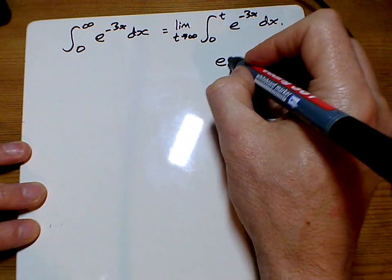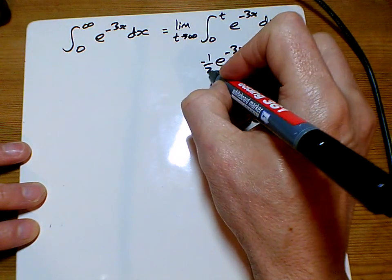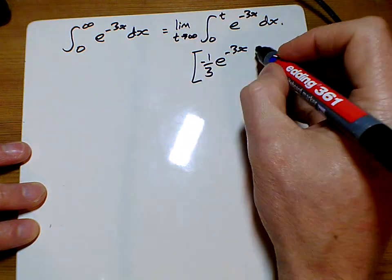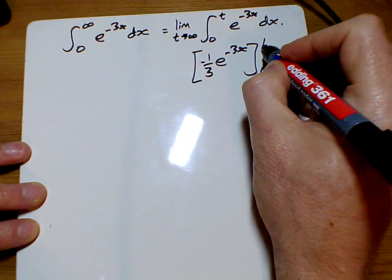Integrating that, e stays the same, but we divide by the extra 3. And we're putting this between 0 and t.